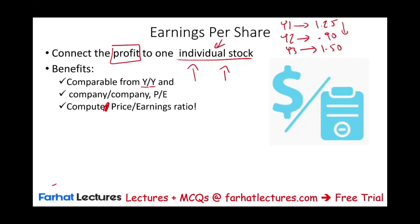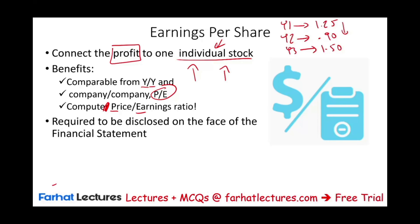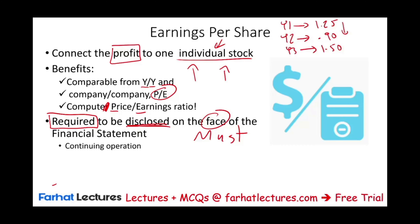EPS also allows us to compute a very important ratio — the PE ratio — which is beyond the scope of this lesson, but I'm just planting the seed. Also, since we are doing accounting, earnings per share is a required disclosure — meaning a must. You have no option; it must be shown on the face of the financial statement. Whether you put it in the notes or on the face, you have to include it — for continuing operations and discontinued operations, you have to compute and show earnings per share.